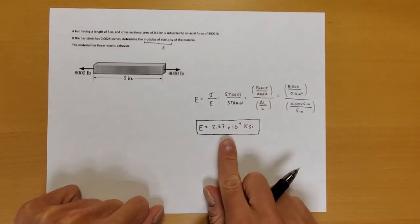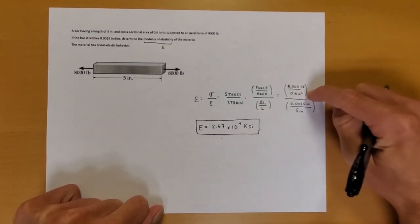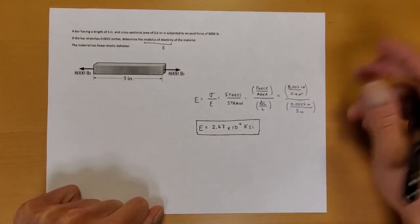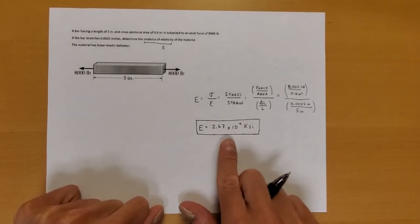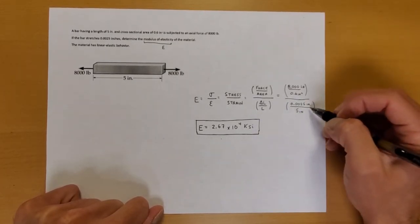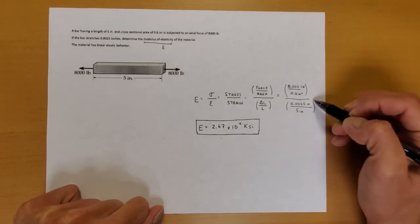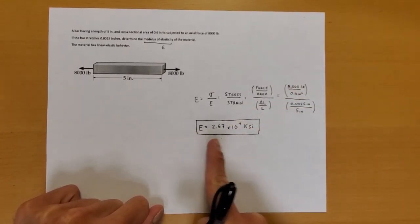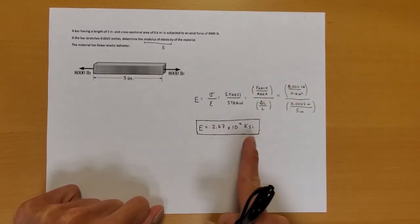When we do all these calculations, we find that E equals 2.67 times 10 to the fourth KSI. The units come out as KSI because initially we had 8,000 pounds per square inch — I converted the units to KSI because that's what the question asked for. An important note: strain is unitless, because it's change in length over initial length — it's essentially a percentage. As a result, Young's modulus has the units of stress, which in this case is PSI, converted to KSI.